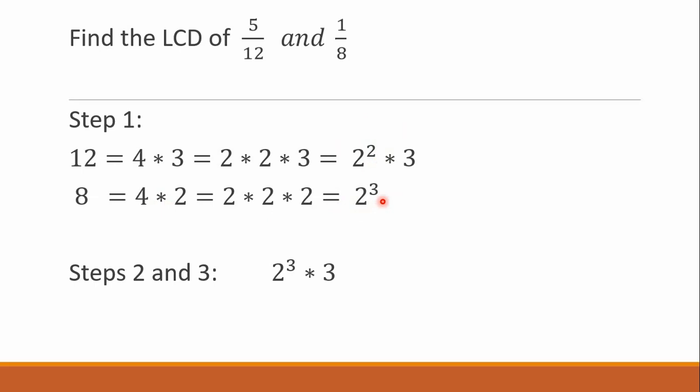So, we're only to copy the 2 cubed. And then, these 3, we will include. So, we have now the factors 2 cubed times 3. And the 2 cubed can be simplified into 8 multiplied by 3, which is equal to 24. And this 24 is our LCD.